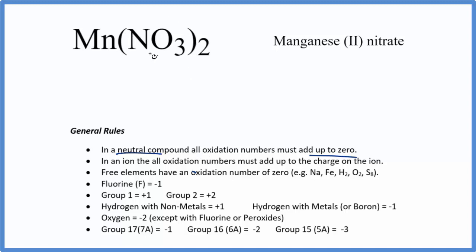This is the nitrate ion, one you should memorize. It has a one minus ionic charge. So we could say that the oxidation numbers here all have to add up to a minus one.